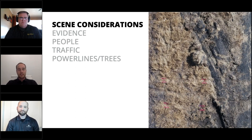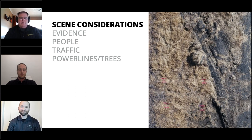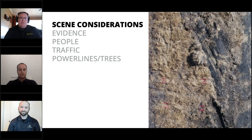Beyond the drone and RTK, Aaron, what do we think about when physically setting up the scene? There's a lot to consider — primarily what the drone is going to encounter when you hit start. Many people don't think about that, especially flying at night when you're nervous and people want the roadway opened. You must absolutely check minimum clearance altitude for tree lines, electrical lines, and cell phone towers before that drone takes off.